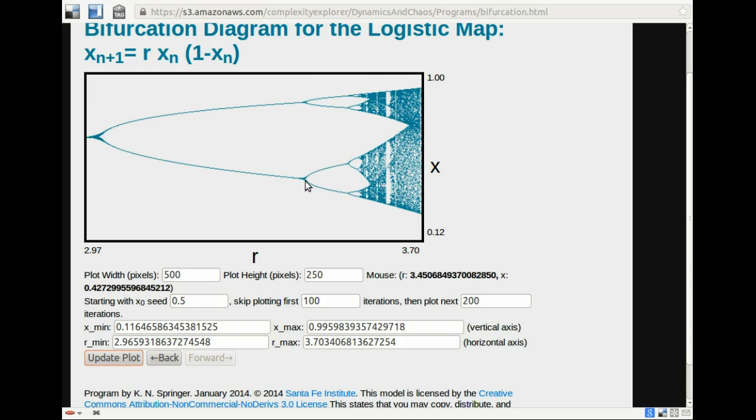The transition occurs here. Here. And that looks to be about 3.44 or 3.45. So that gives us an approximate r value where this bifurcation occurs.